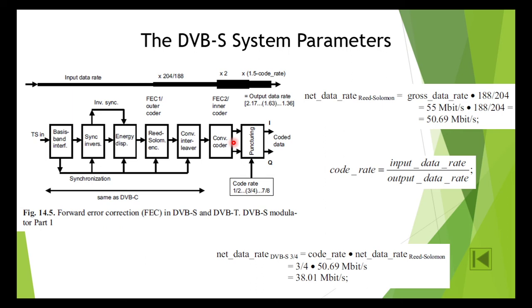In DVB-S, the code rate can be selected within a range of 1/2, 3/4, 2/3, 7/8. If the code rate is 1/2, the data stream is expanded by a factor of 2, double. The error protection is now maximum and the net data rate has dropped to a minimum. The code rate of 7/8 provides only a minimum overhead but also only a minimum of error protection. The available net data rate is then at a maximum in that case.